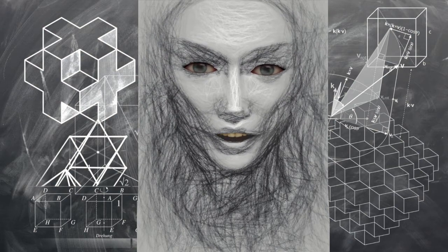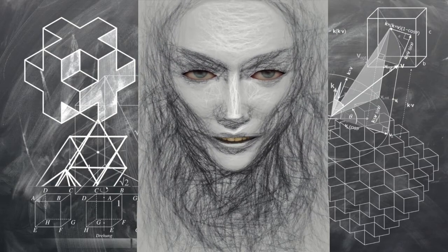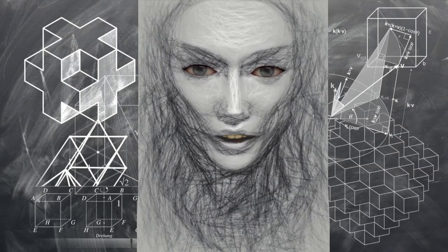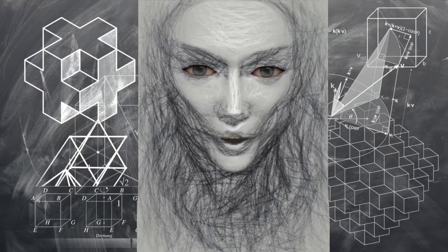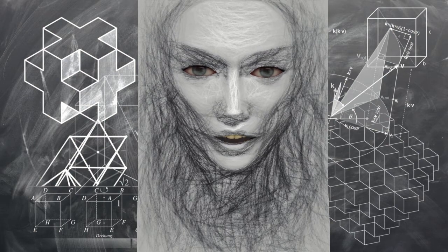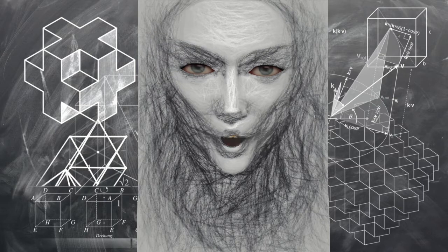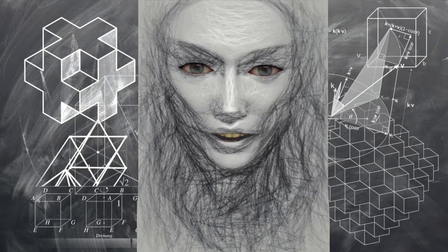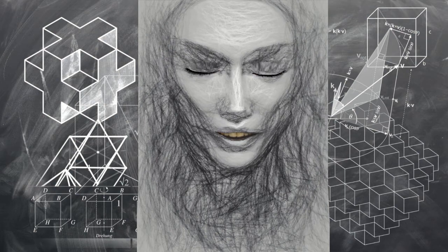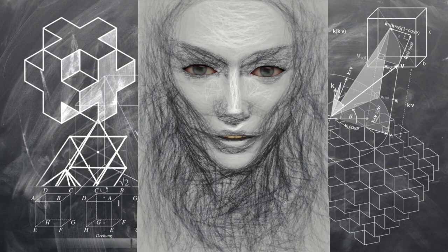The second law of thermodynamics keeps tapping them on the shoulder and reminding them that the universe is ruled by entropy, not wishful thinking. Not to mention that Darwinian evolution is built on the erroneous and laughable theory of abiogenesis. Abiogenesis teaches that all life evolved by itself from a rock, from non-living chemicals.